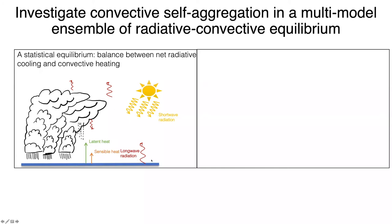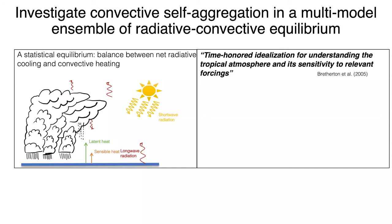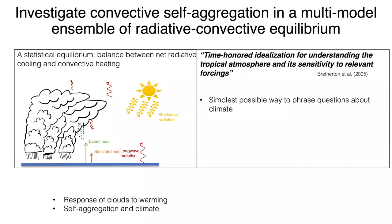Radiative convective equilibrium is a statistical equilibrium where on average we have a balance between net radiative cooling of the atmosphere and heating from deep convection. As one of Chris Bretherton's papers puts it, it is a time-honored idealization for understanding the tropical atmosphere and its sensitivity to relevant forcings — really the simplest possible way to phrase many important questions about climate, including questions about the response of convective clouds to warming and about aggregation and climate. However, there is not necessarily a standard way to set up these RCE simulations, and with the renaissance in using RCE over the last 10 years, many people configure it in slightly different ways, making it difficult to compare different studies.